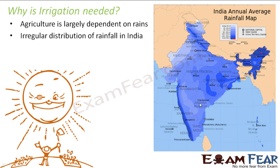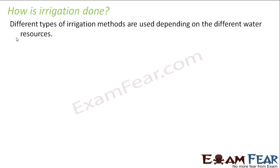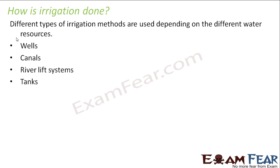This would mean no agriculture in those places without rainfall. In order to remove that dependency on rainfall, irrigation is needed. When you have irrigation, it doesn't matter whether it rains or not — you can always have crop production. Now let us see how irrigation is done. Different types of irrigation methods are used depending on different water resources: wells, canals, river lift systems, and tanks. Let us discuss each in detail.